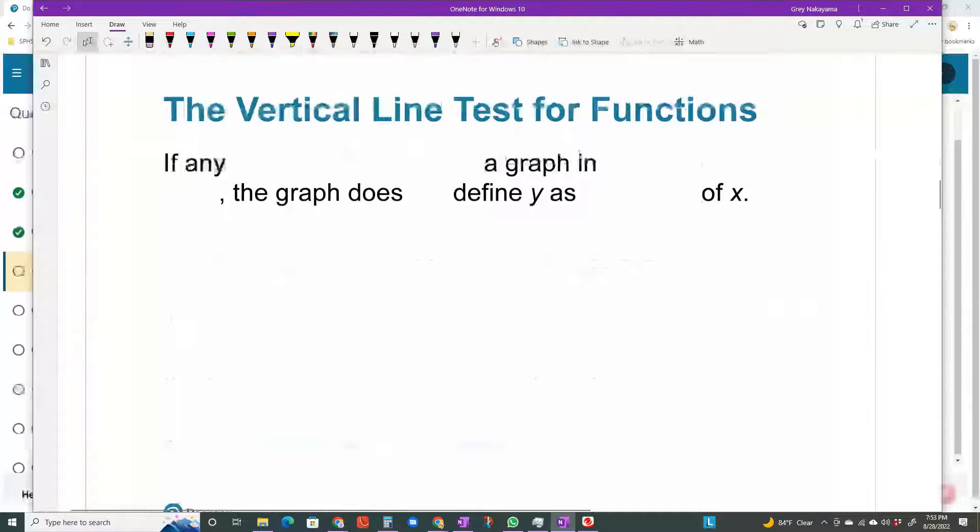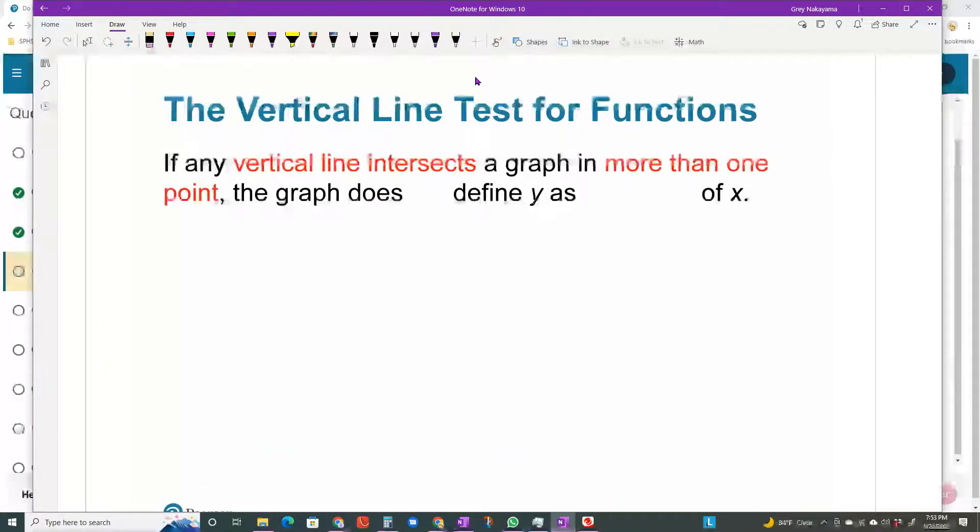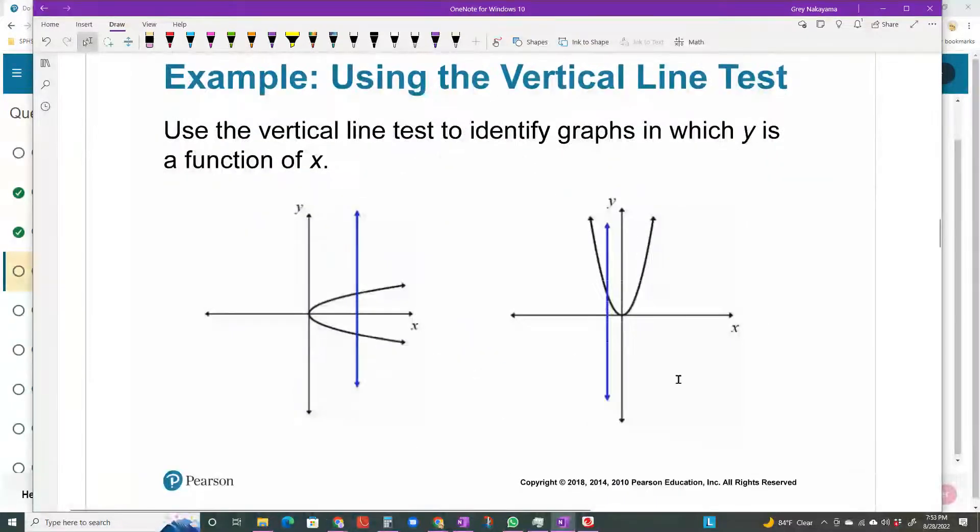Another thing I know you learned in a previous class was something called the vertical line test. And if any vertical line intersects a graph in more than one point, the graph does not define y as a function of x. Here's an example of two graphs. One of them is a function and one is not. So if I look at this graph and I cross the vertical line and I touch it more than once, it is not a function. So this one is not a function and this one is a function. It does not matter where I draw that vertical line. I will always only touch it one time.